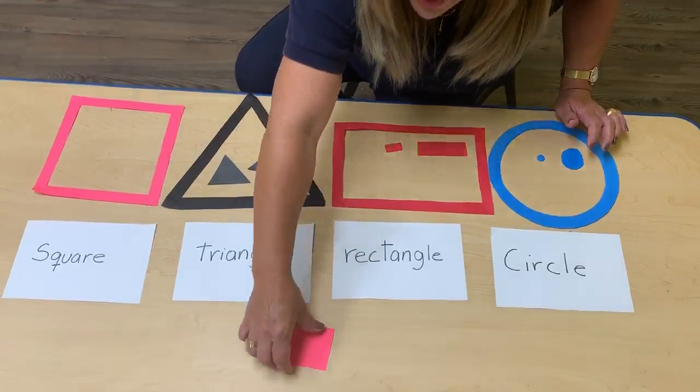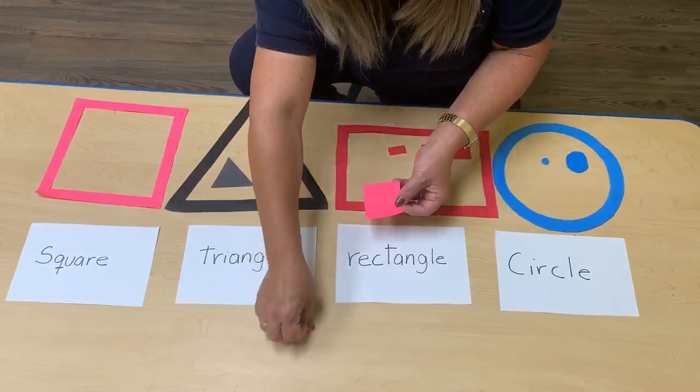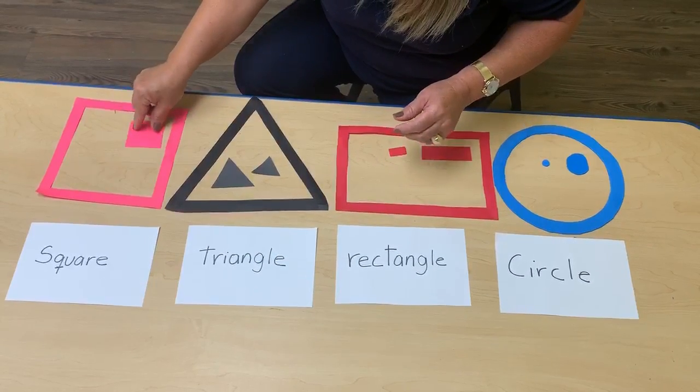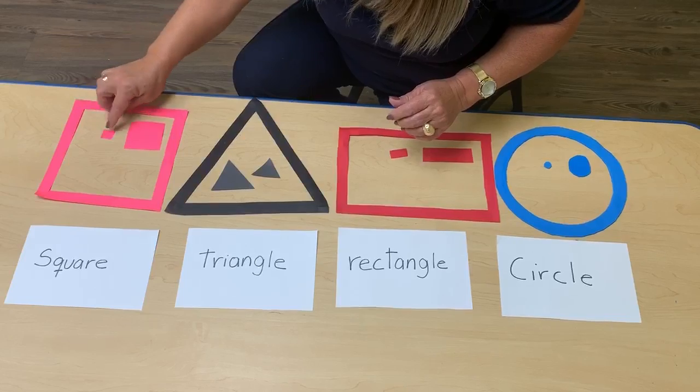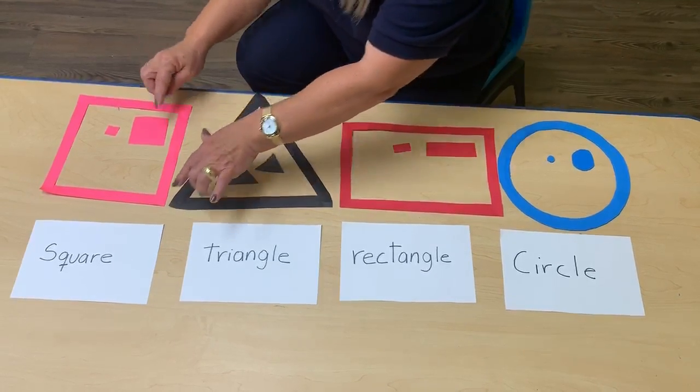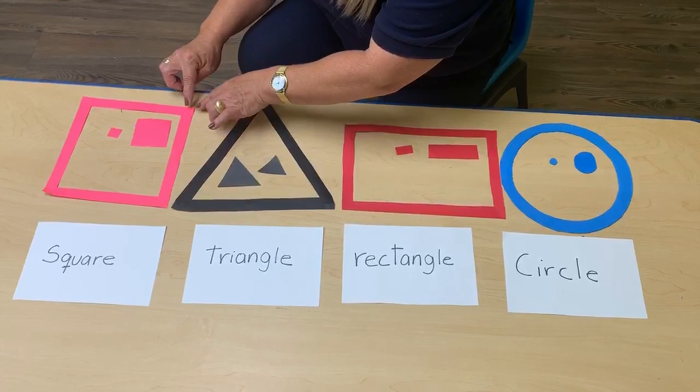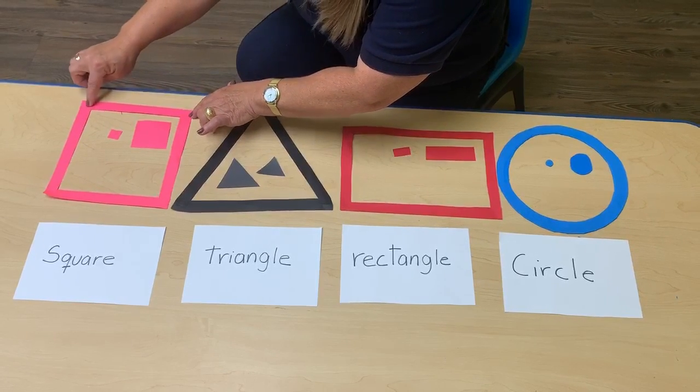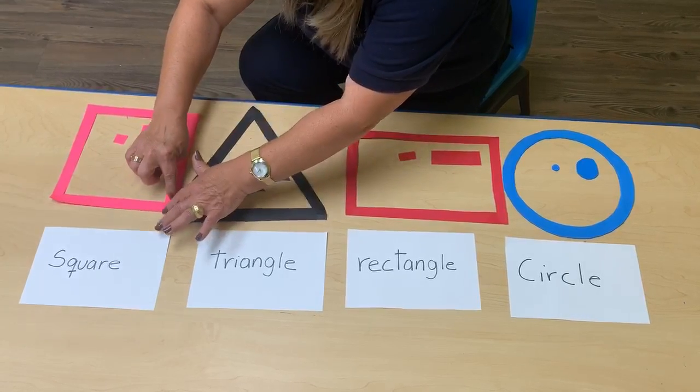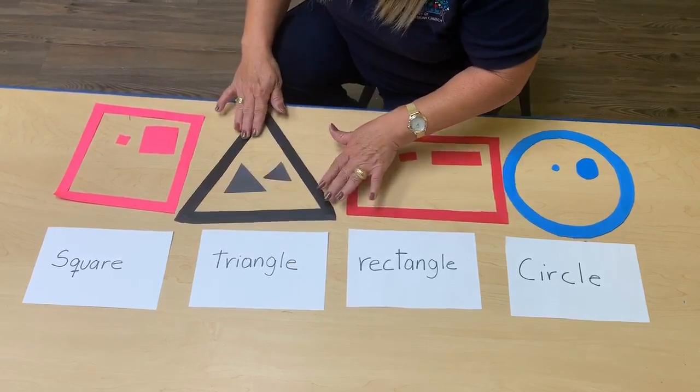Let me see where I can find the square. It's big and little. And the square has the same four sides. One, two, three, four. Four sides.